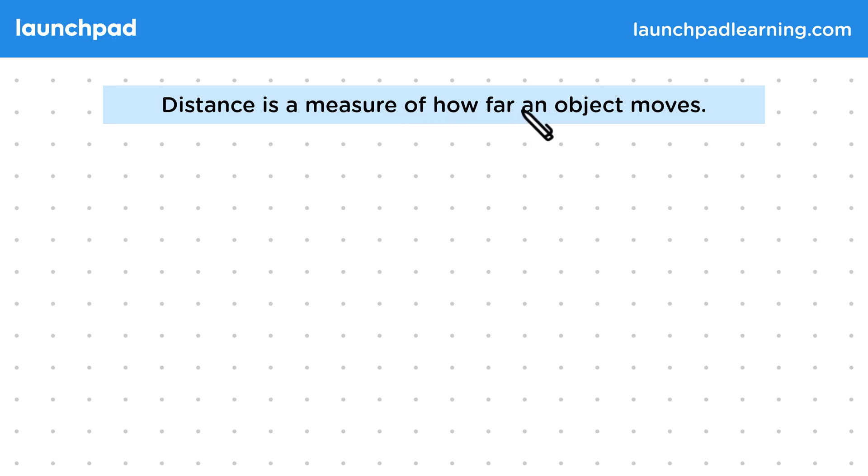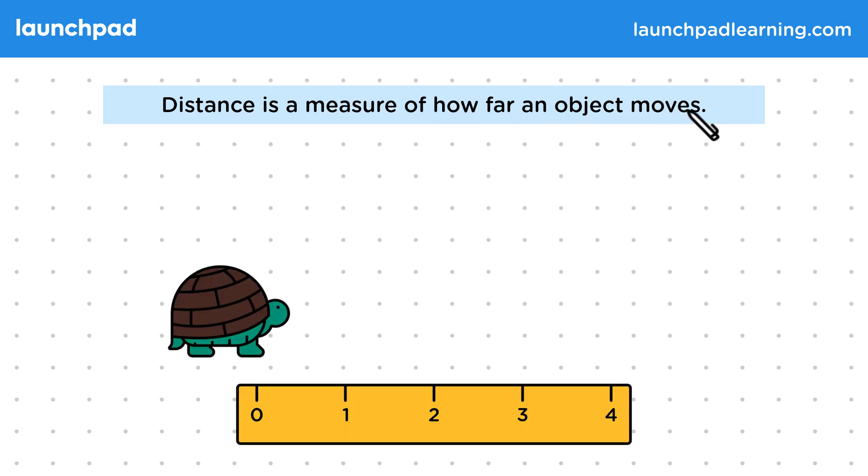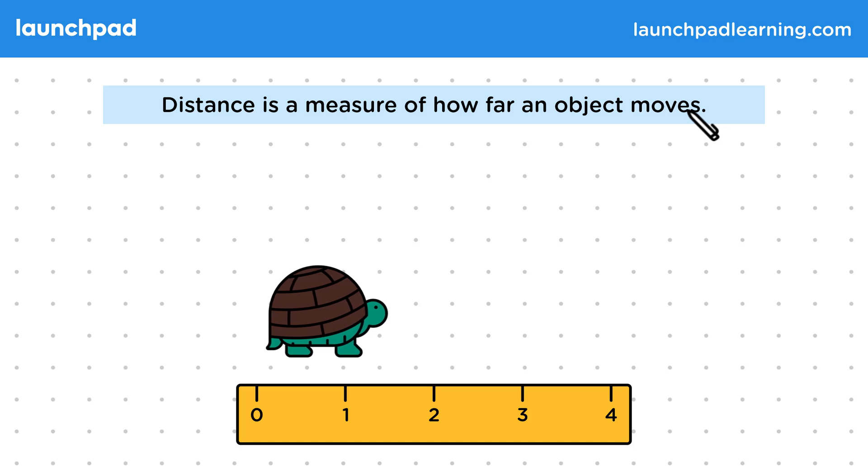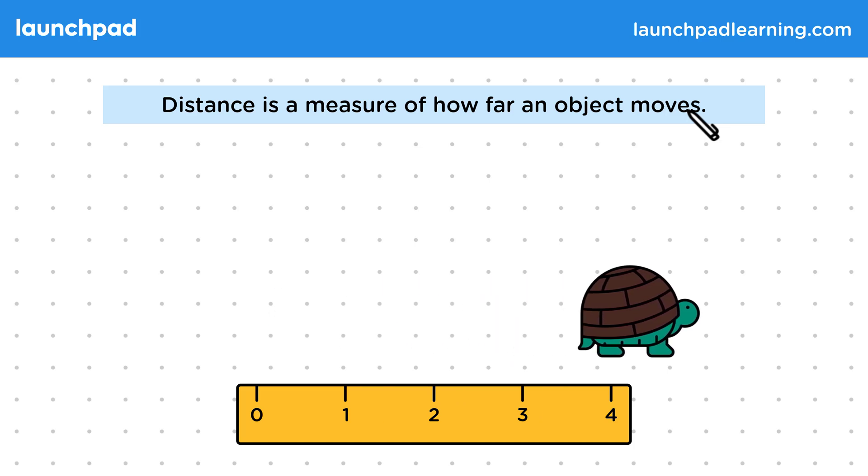Distance is a measure of how far an object moves. The journey of a tortoise is just one example of a distance. We can measure this distance in various ways, such as using a ruler or a measuring wheel.